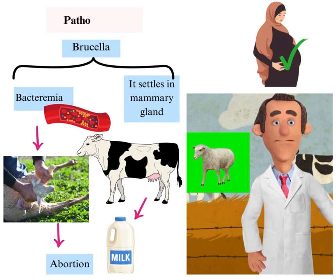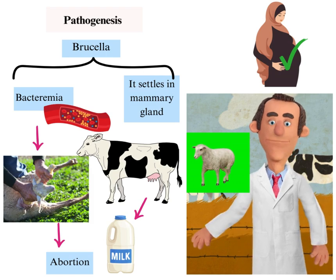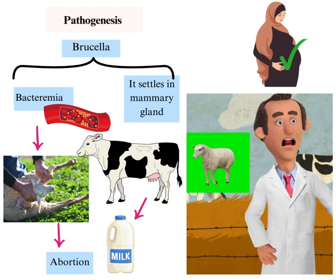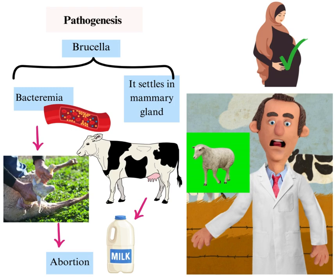In the pathogenesis of brucellosis, the organisms enter the blood of animals causing bacteremia. The brucella settle in the placenta, which contains erythritol — a growth factor for brucella — causing placentitis and abortion. It also settles in the mammary gland and is secreted in milk.